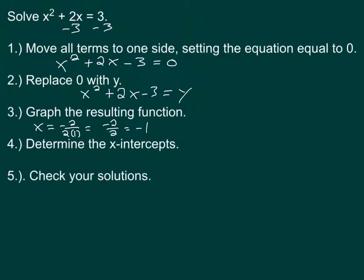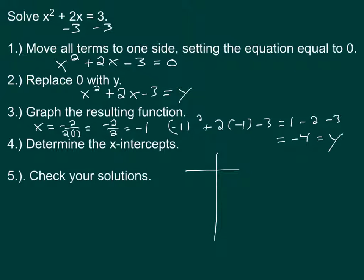So x equals negative 1 is our axis of symmetry. We're then going to plug that in to the function and get negative 1 squared plus 2 times negative 1 minus 3, which is going to give me 1 minus 2 minus 3. And that equals negative 1 minus 3, negative 4. And that equals my y. So my vertex would be at negative 1, negative 4. So then I could just create an x, y table.